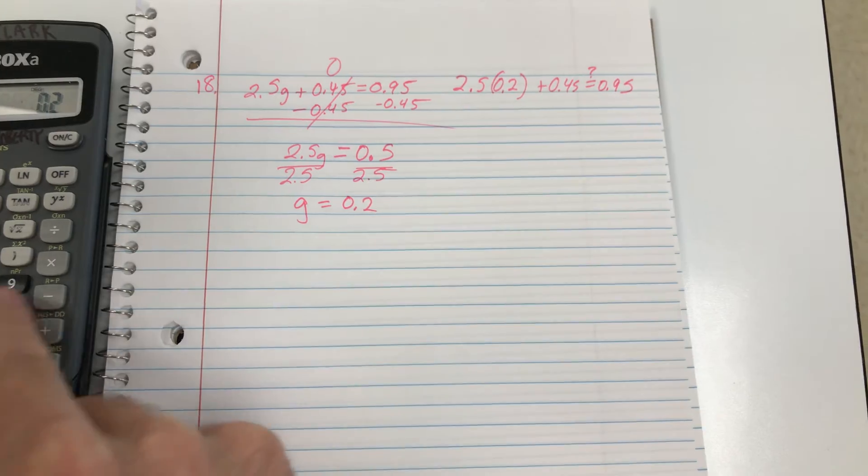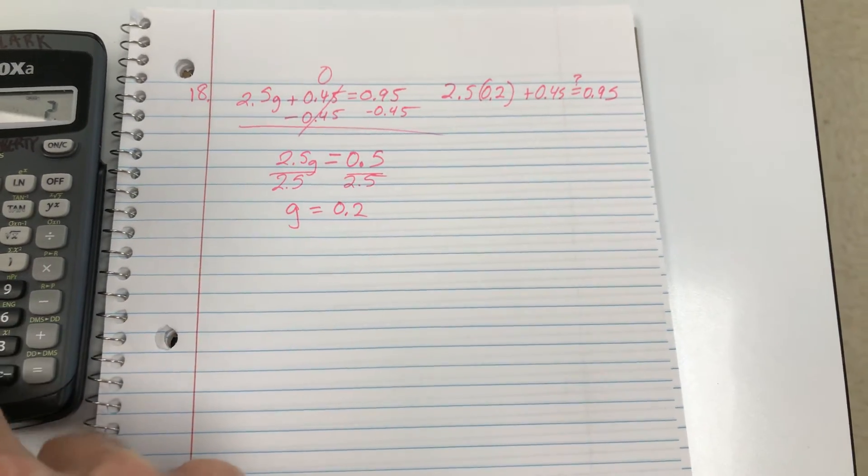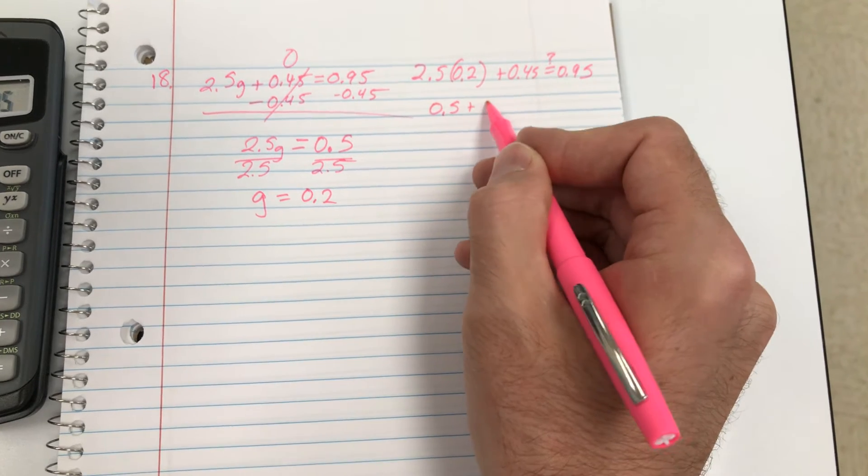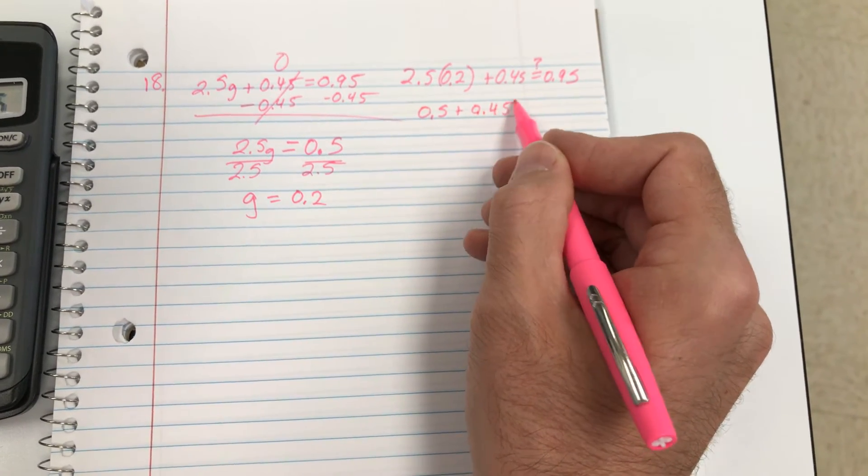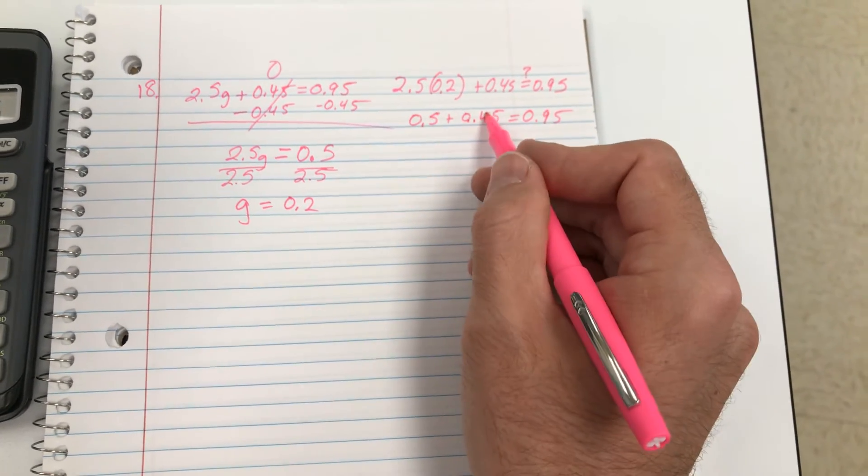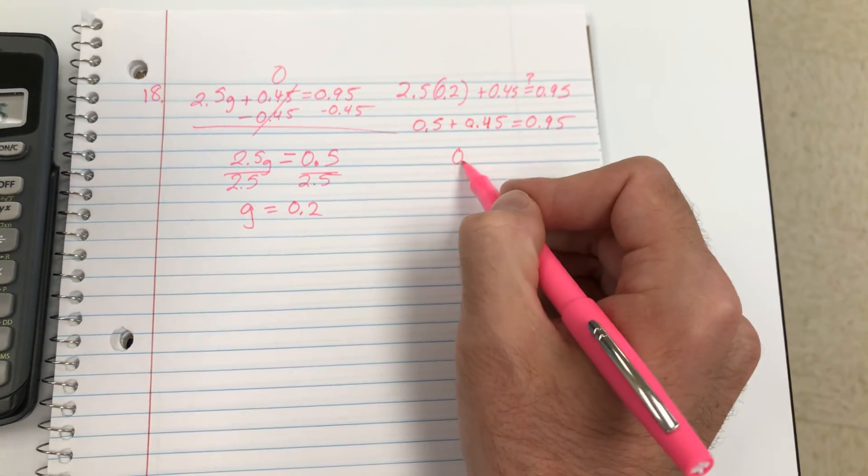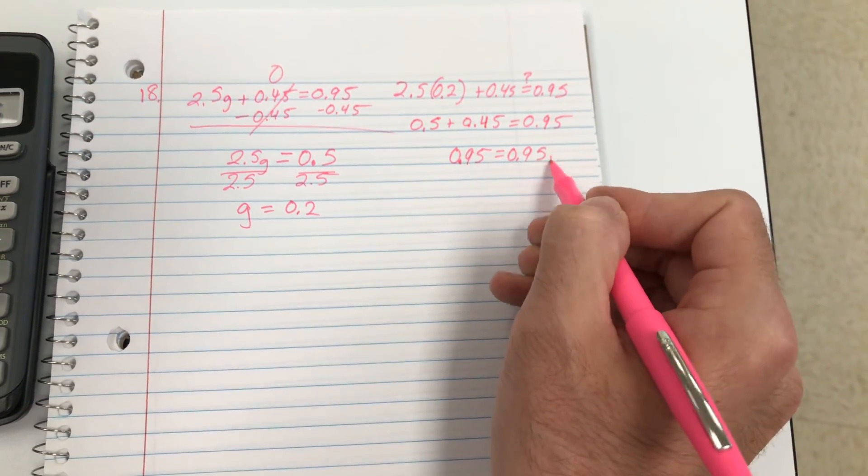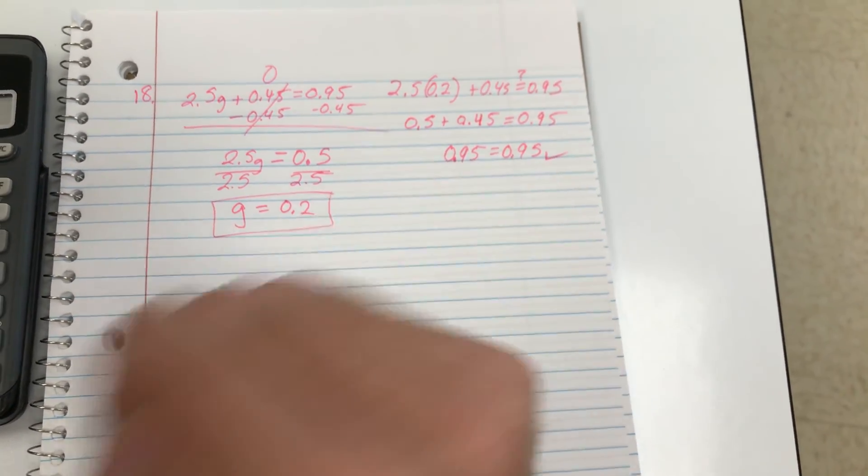2.5 times 0.2 is 0.5. 0.5 plus 0.45. That's like if you had 50 cents and added 45 cents, you'd get 95 cents. That's the same thing on both sides. So 0.2 is the solution.